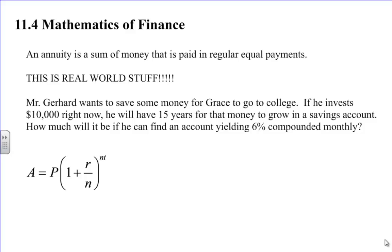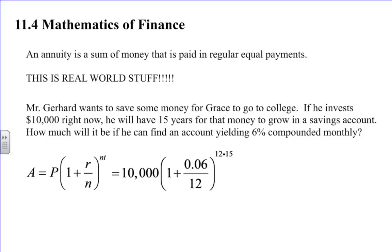So if I want to start saving some money for Grace to go to college, I'm going to invest $10,000 right now. I have 15 years before Grace is going to go to school, and that's going to grow in a savings account with 6% interest, compounded monthly. We know this formula, A equals P times 1 plus R over N to the NT from Algebra 2. And we know that if we plug the information in, 12 is our N value because there's 12 months in a year. 12 times 15 is 180. And then we plug it all in, and we get $24,540.94.